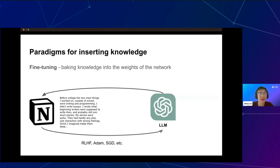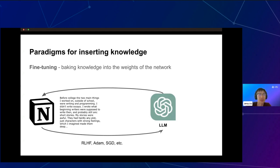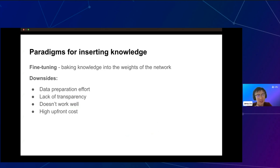There are a few paradigms for adding knowledge into a language model. The first is fine-tuning, which is more along the lines of classical machine learning, where you add new knowledge by retraining the network. This boils down to some optimization process over the weights of the network so that you train it on new private data. There are a few downsides today: there's a high amount of data preparation effort needed, a certain lack of transparency, and it doesn't actually work well for a variety of cases. It's also pretty expensive.